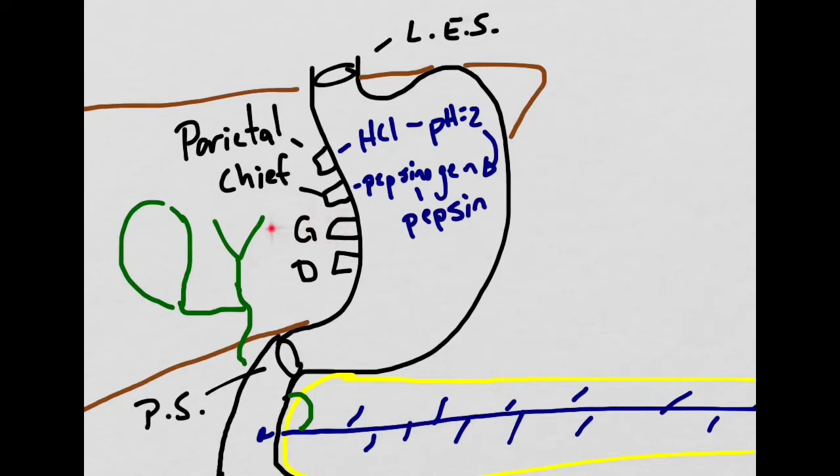The G cells are going to secrete gastrin, and gastrin is a hormone that will enter into the blood system and come back to the parietal cells and stimulate the production of HCl. It will also stimulate the chief cells and the motility of the stomach.